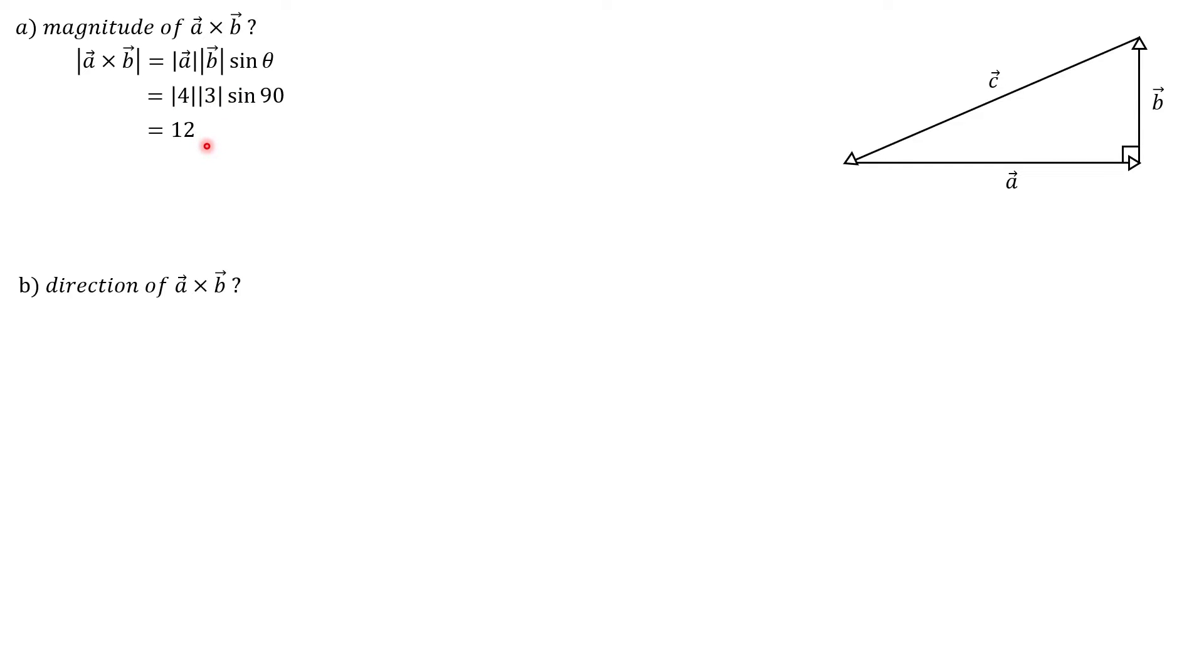Now for part B, we are asked to find the direction of A cross B. And one way that we can do that is by using the right hand rule. For the right hand rule, you want to take your pointer finger and put that in the direction of your first vector, which is A, so that's going to be pointed to the right, and then your middle finger will be in the direction of B, or your second vector, which will be pointed up.